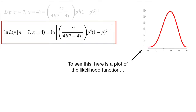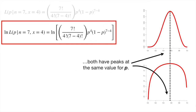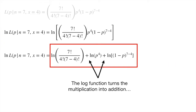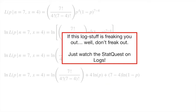Here is a plot of the likelihood function, and here is the log of the likelihood function. Both have peaks at the same value for p. The log function turns the multiplication into addition, and it turns the exponents into multiplication. If this log stuff is freaking you out, don't freak out — just watch the StatQuest on logs.